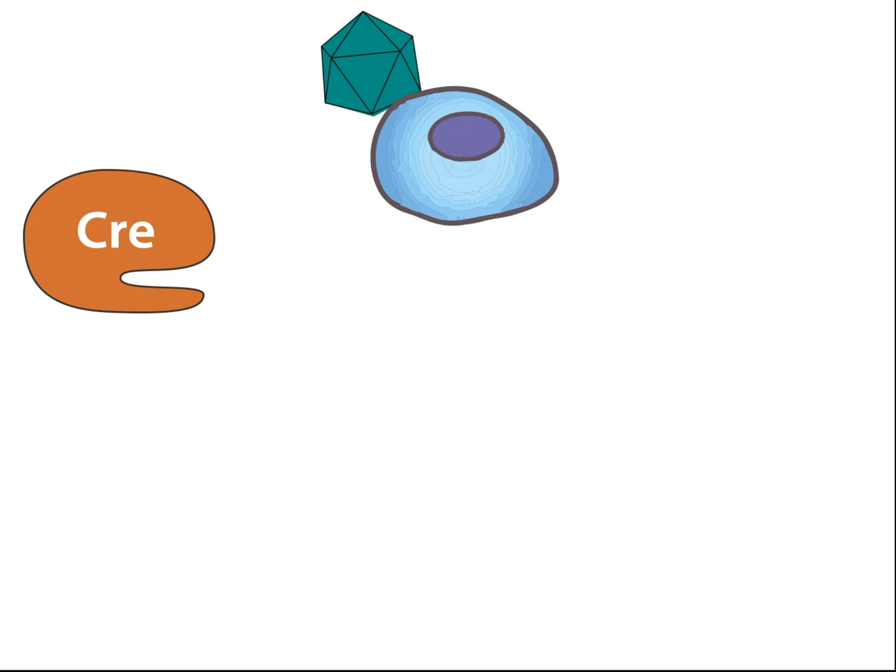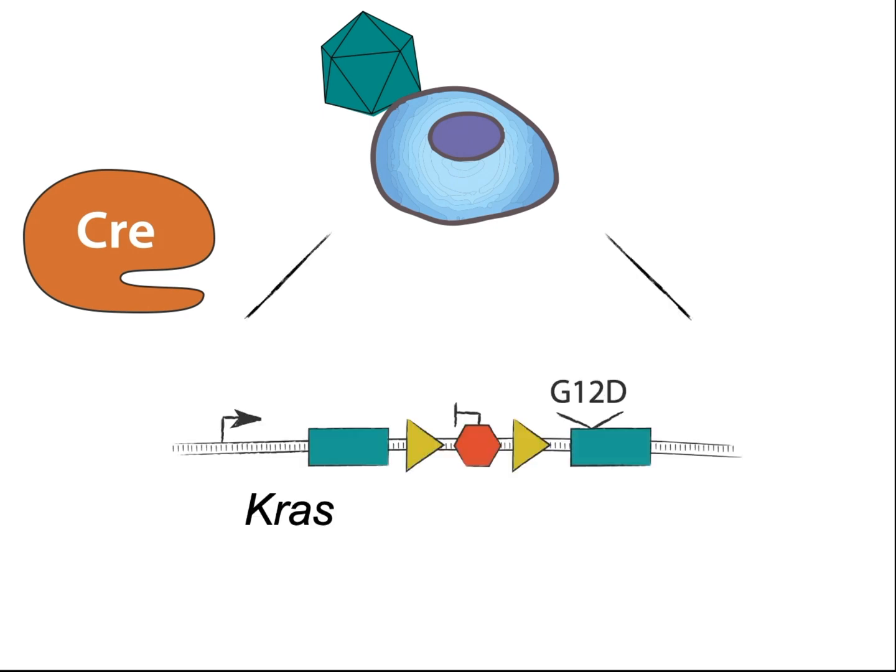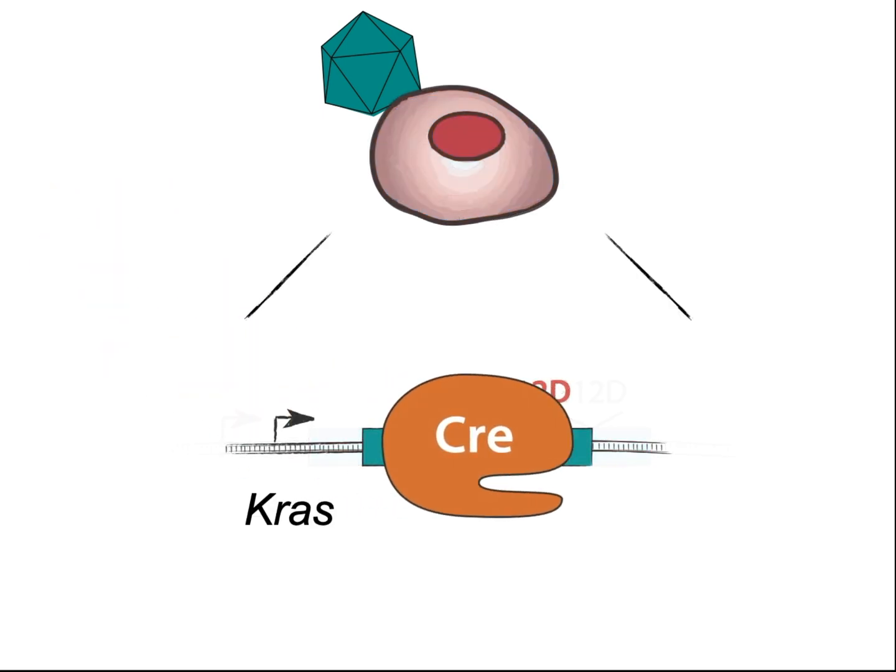In this first model, a mutant form of the KRAS oncogene was activated. This accelerates cell division, forming an early-stage tumor.